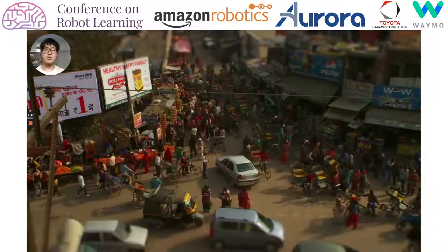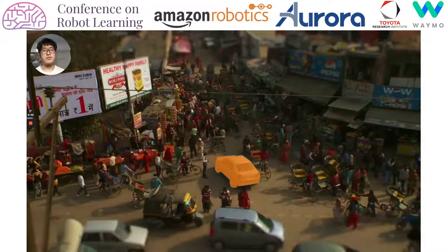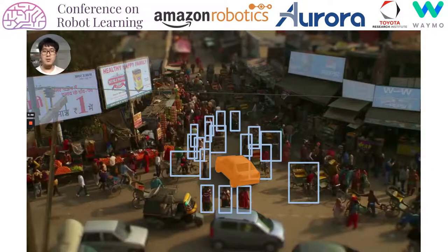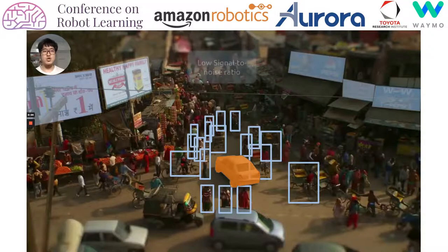The task is to discover the drivable area and determine the next action. But the observations that a robot receives contain the changing appearance of nearby pedestrians, the contents of billboards, etc. This irrelevant information introduces an extremely low signal-to-noise ratio and makes RL difficult.